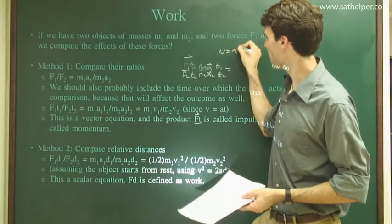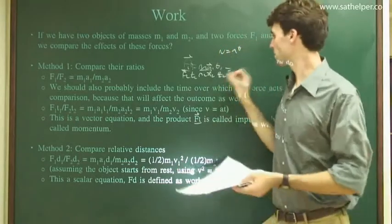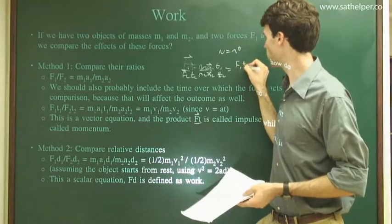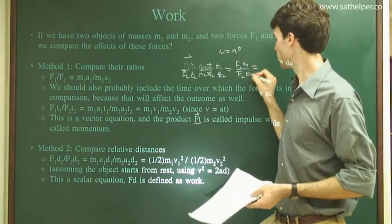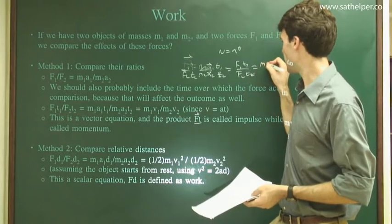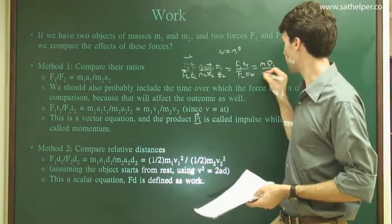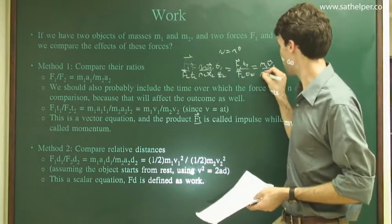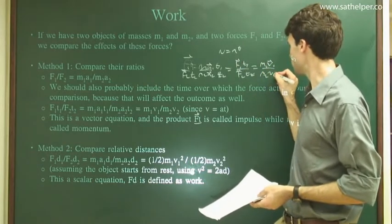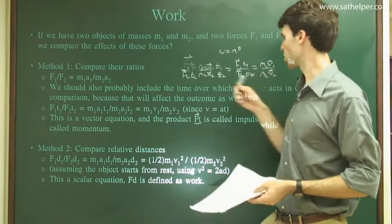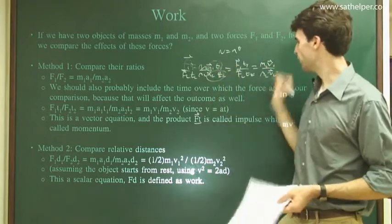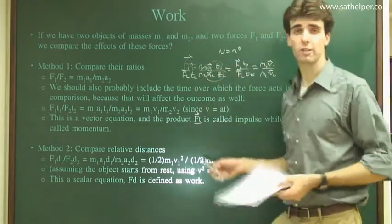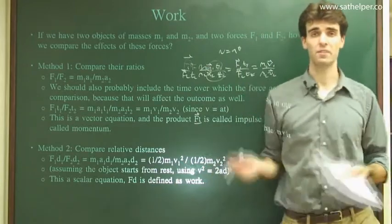So we can rewrite this as F1T1 divided by F2T2 equals M1V1 divided by M2V2. We absorb time into acceleration. So MV is called momentum, and Ft is called impulse, and that will be the topic of the next lesson.